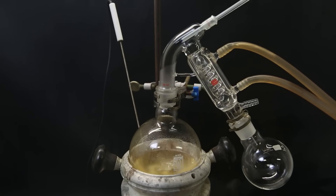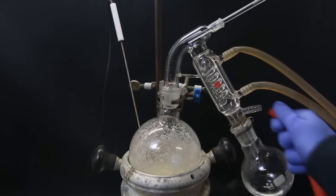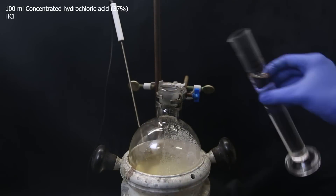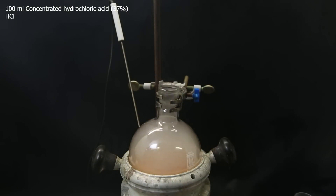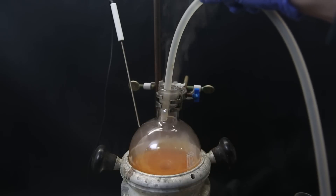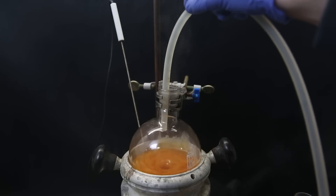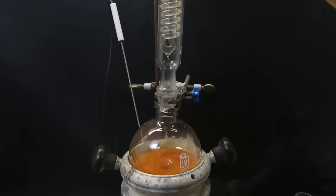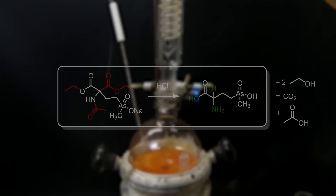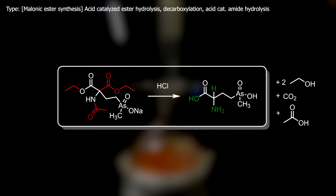I evaporate off all of the solvent, then for the next reaction I add in 100 ml of water and 100 ml of concentrated hydrochloric acid. It immediately turns orange, and I remove the acid vapors by flushing with nitrogen, then set this mixture up for a reflux for 3 hours. In this reaction, we are completing the malonic ester synthesis by hydrolysis of the esters, a decarboxylation, and an amide hydrolysis, all with aqueous acid and heat.